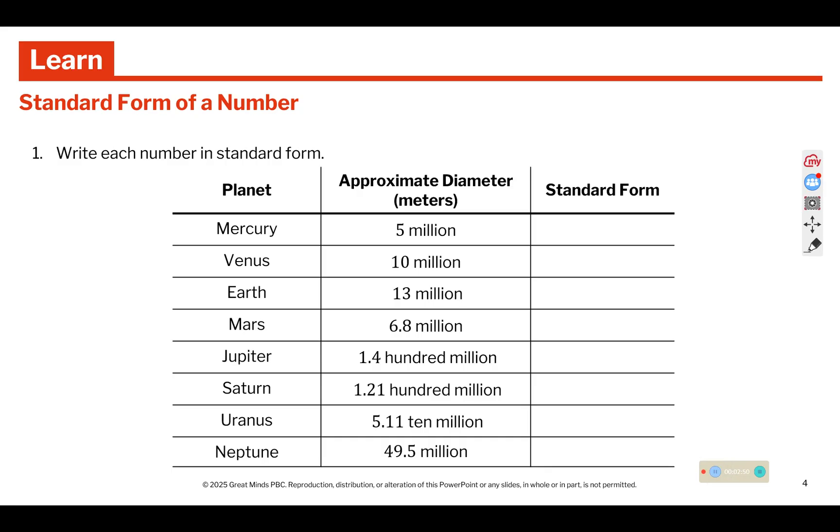Here it says write each number in standard form. Standard form is just like a regular number. So 5 million is 5 with 6 zeros following it. 10 million, 13 million. 6.8 million is a 6 in the million spot, and then the 8 is in the hundred thousands.